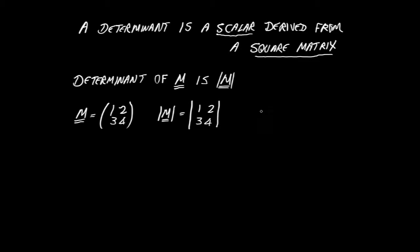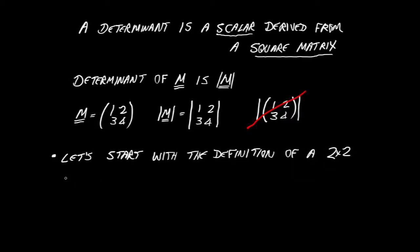Here's an example of M, and here is how we would write the determinant of M. Note that we don't bother writing straight sides and curved brackets as well. It's just enough to have the straight line sides. Let's start with the definition of a 2x2 determinant. Let's write out a general 2x2 using symbols: A, B, C, D written inside our straight line sides.